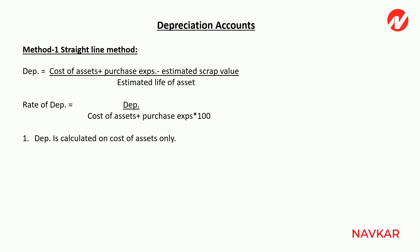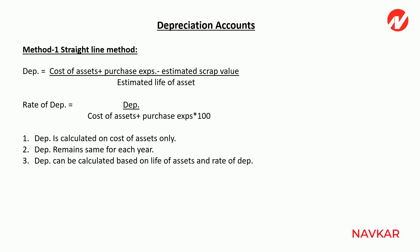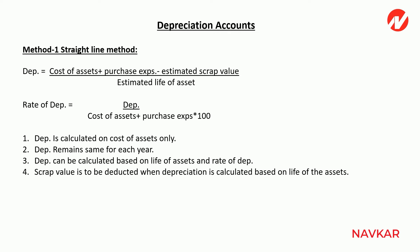Key points for SLM method: Point one — in the SLM method, depreciation is always calculated on the original cost. Point two — depreciation remains the same for each year. Depreciation can be calculated based on the life of the asset or the rate. When calculating based on life, scrap value is deducted; when rate is given, scrap value is not deducted.